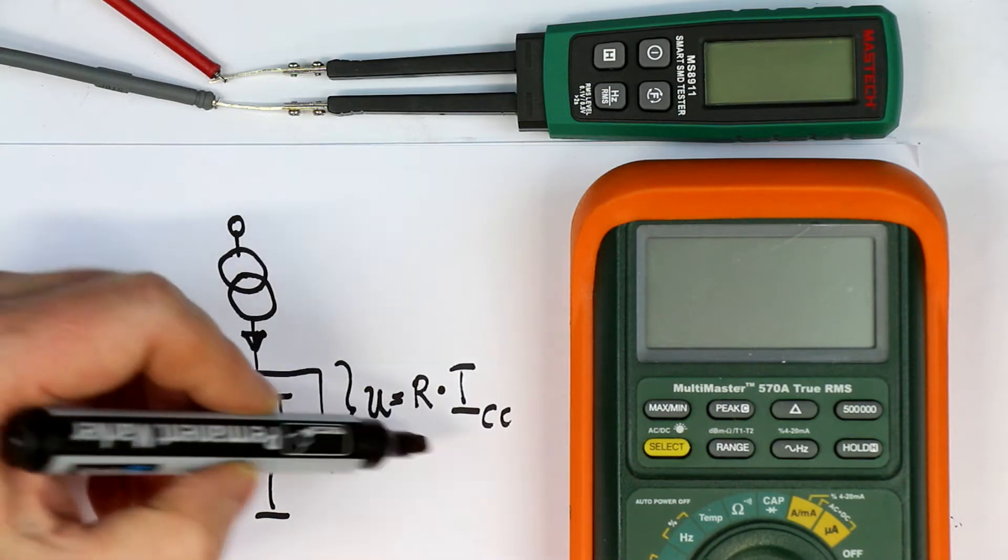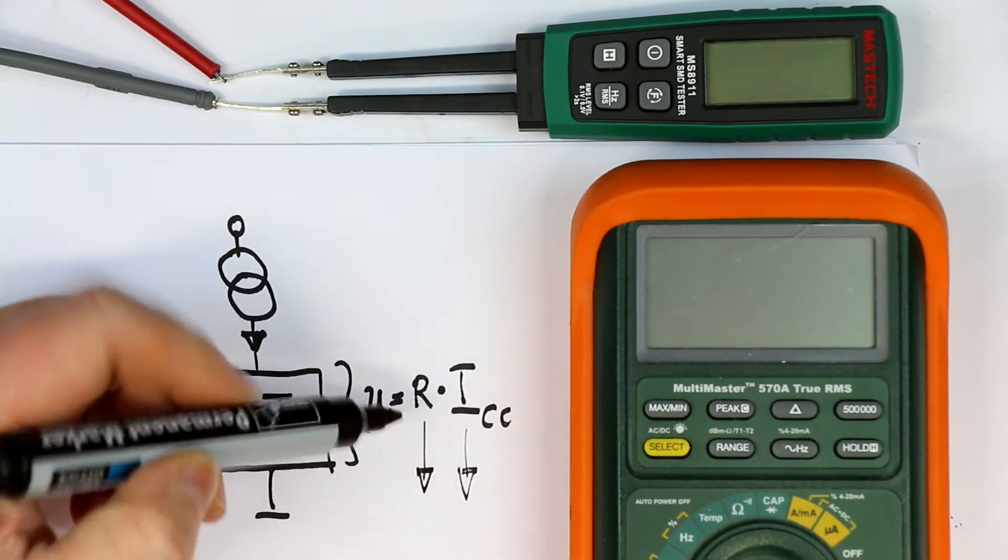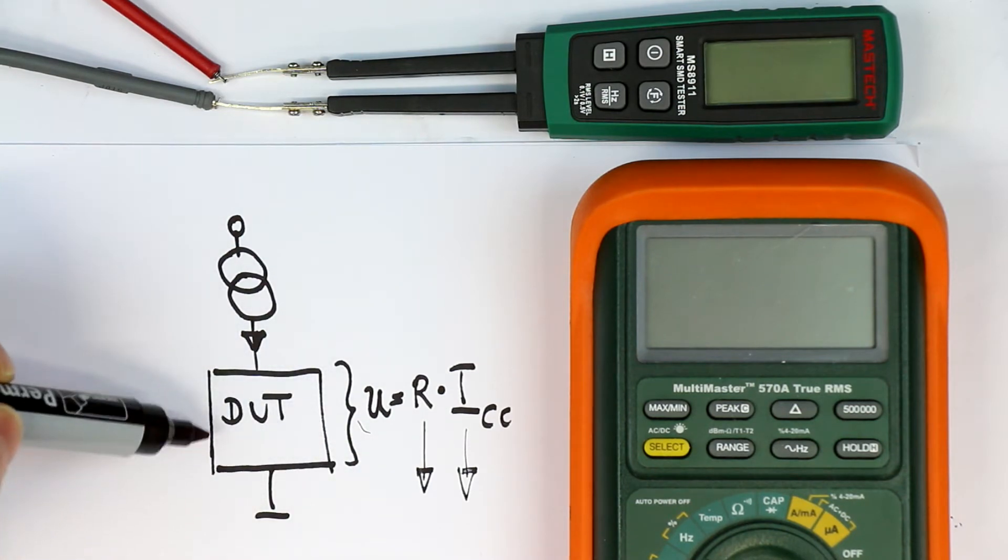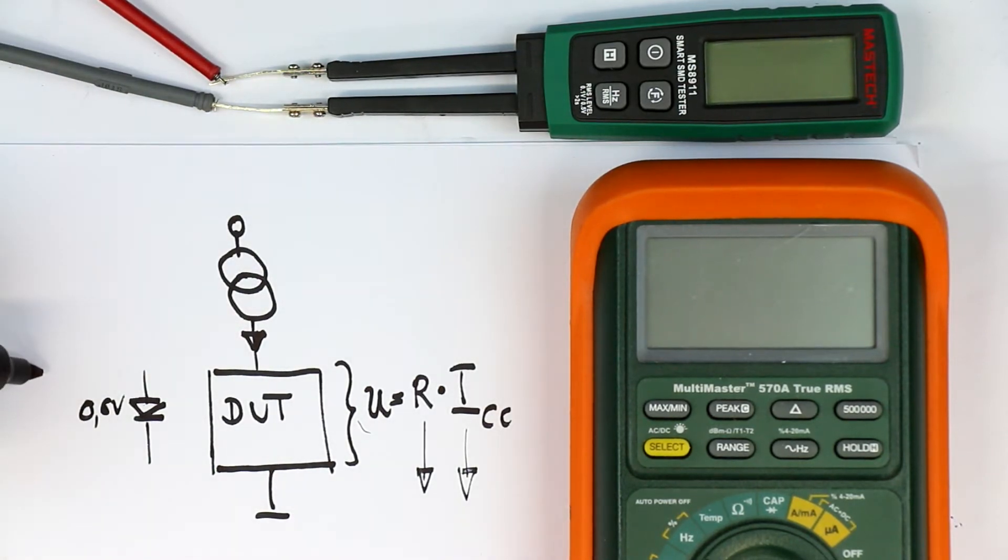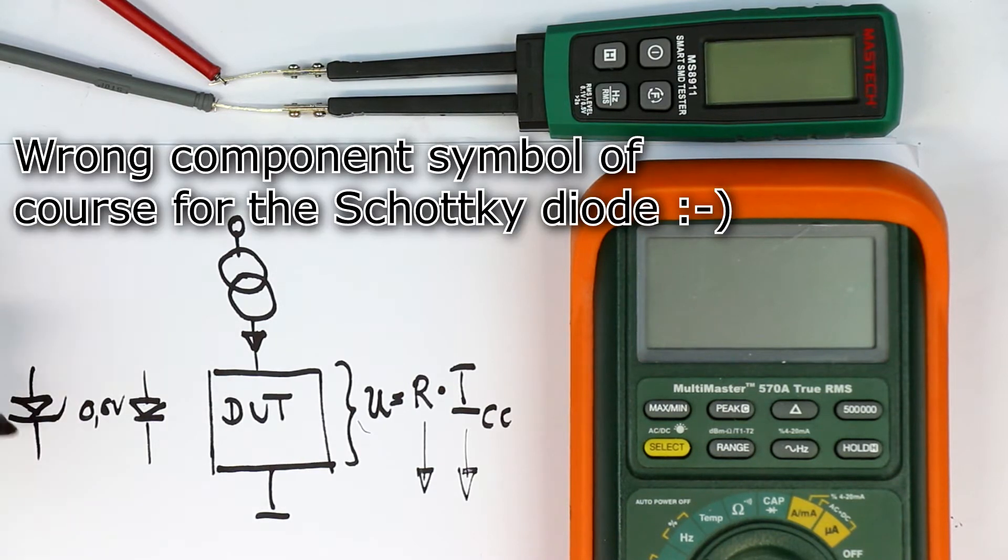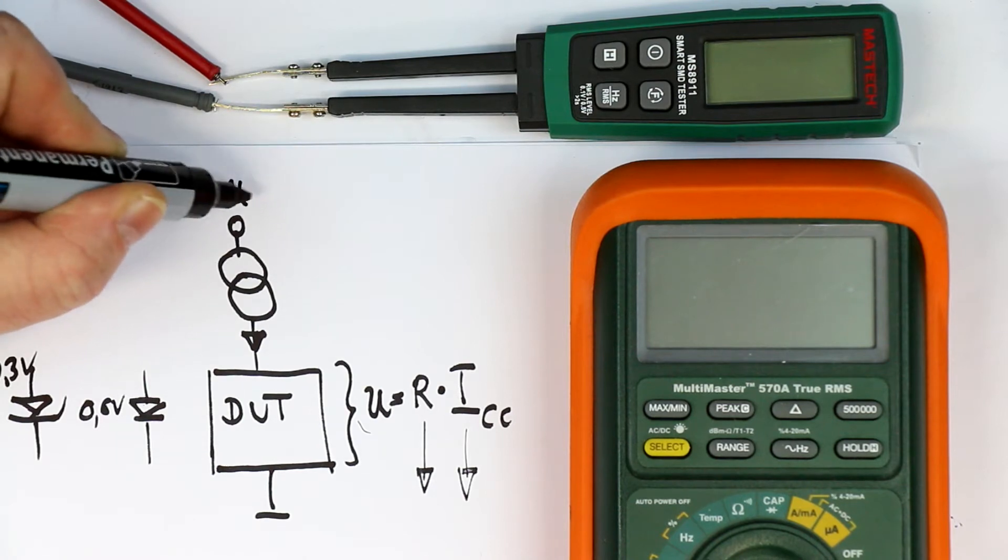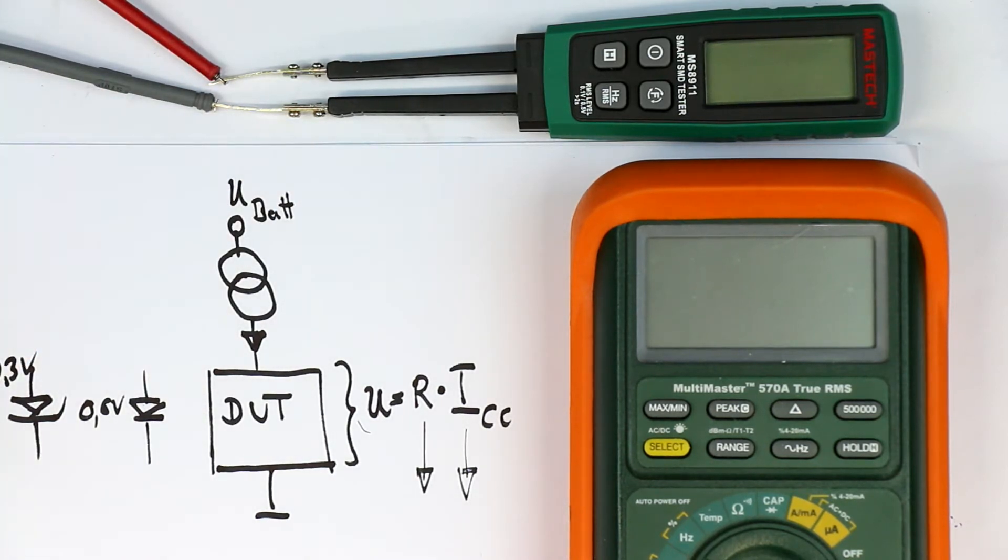But we can also reverse this principle, if we once measure the constant current from the multimeter, and take a look at the Ohms value that is in the display, then we know which voltage is developed here over our device under test. Now, if this device is, for example, a normal silicon diode, we should get 0.6 volts, in the range at least, depending of course on the value of the constant current. If it's an LED, as long as the battery voltage here that supplies the constant current source is at least that large that the LED lights up, then we get the forward voltage of our LED.